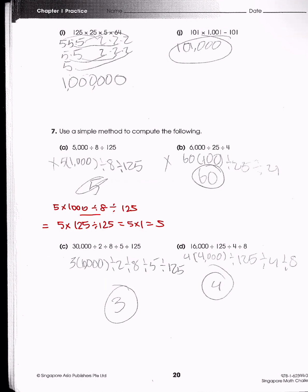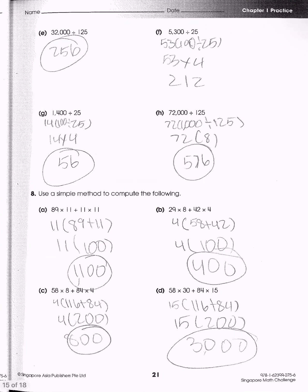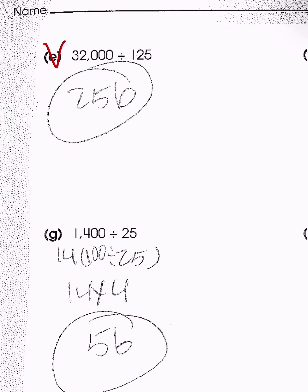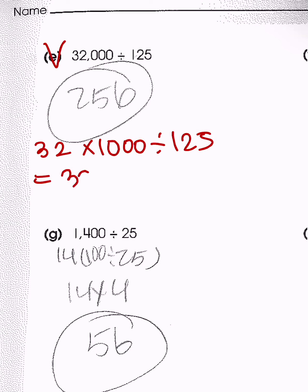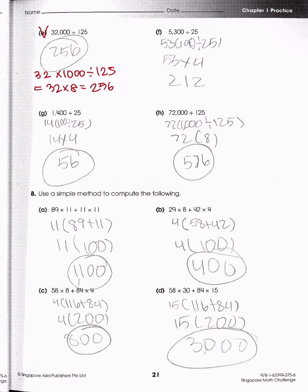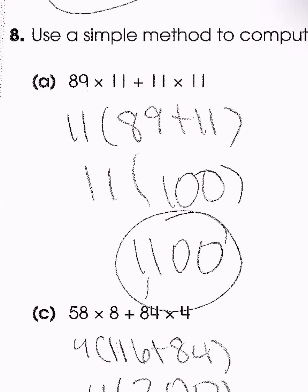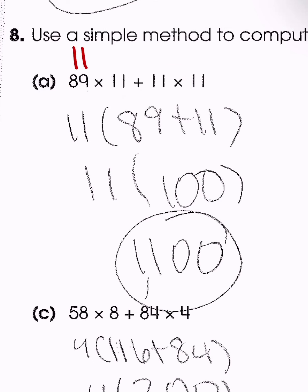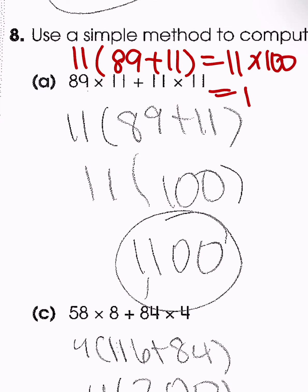For problem E: 32,000 divided by 125. Express 32,000 as 32 times 1,000 divided by 125. Since 1,000 divided by 125 equals 8, we have 32 times 8 = 256. Then for question A of the next set: 11 is multiplied in both groups, so group as 11 times (89 plus 11) = 11 times 100 = 1,100.